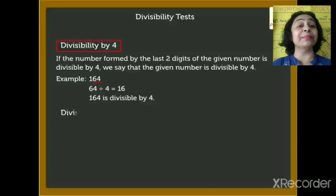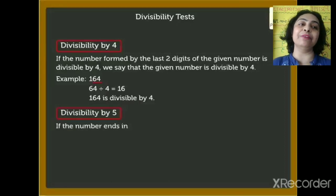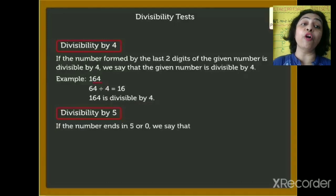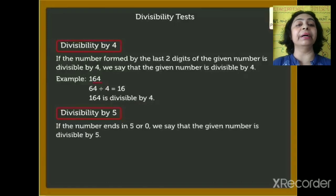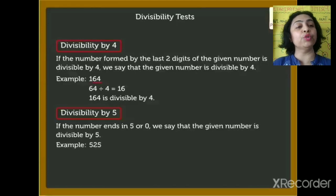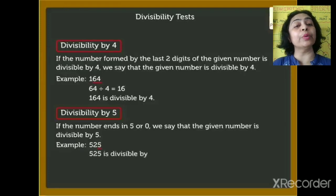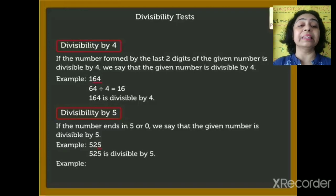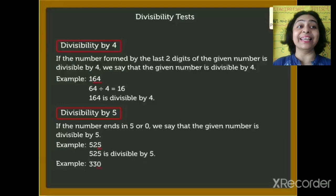Now, divisibility by 5 is very easy. If the number ends with 5 or 0, we say that the given number is divisible by 5. Example: 525 ends with 5, so 525 is divisible by 5. Another example: 330 ends with 0, so that is also divisible by 5.